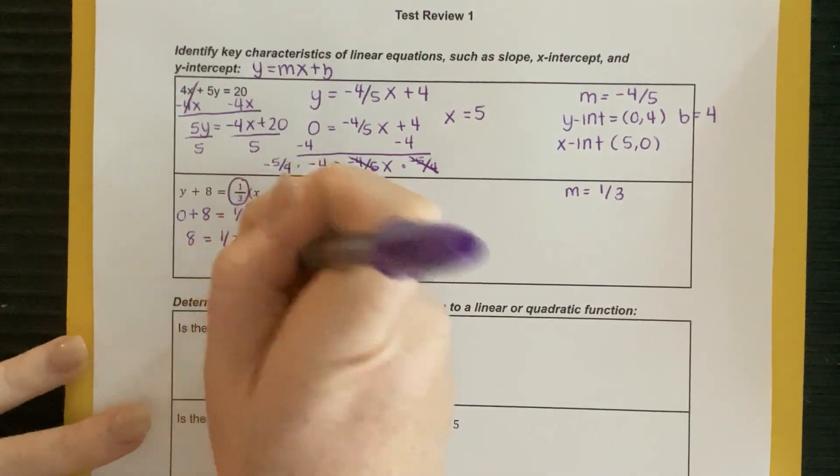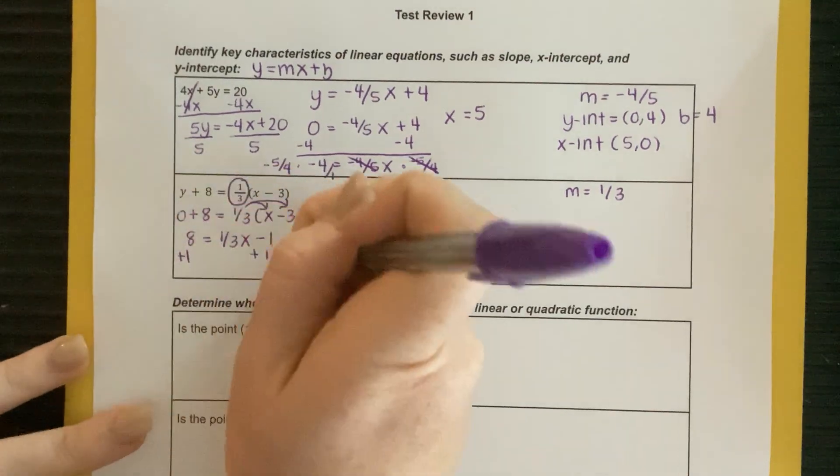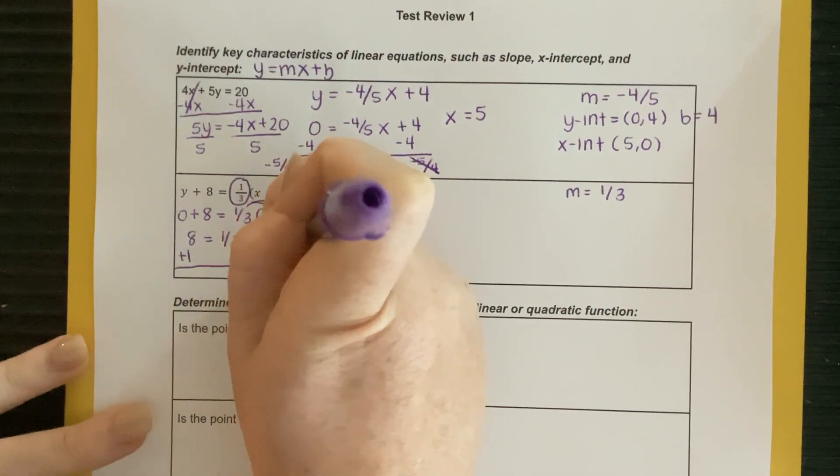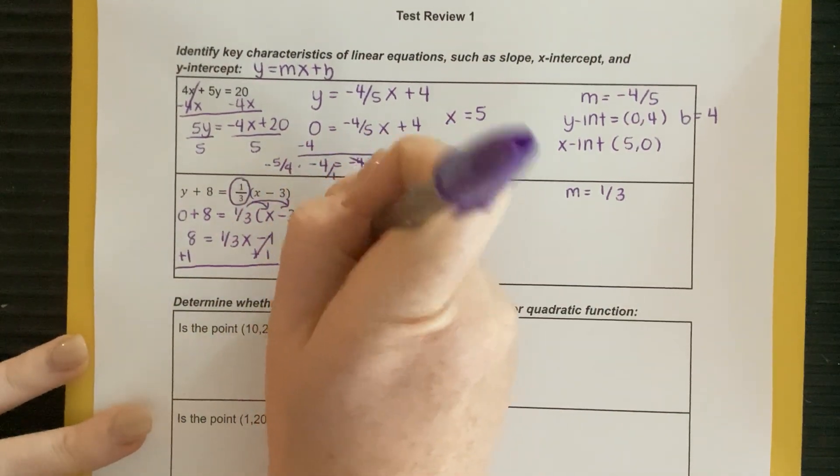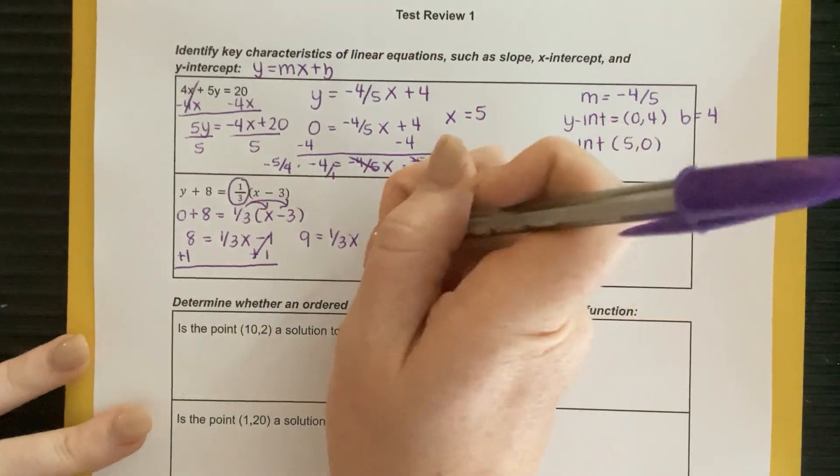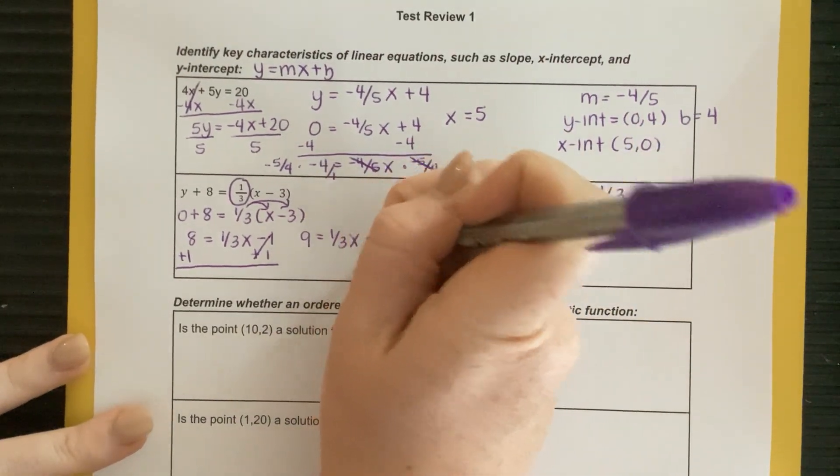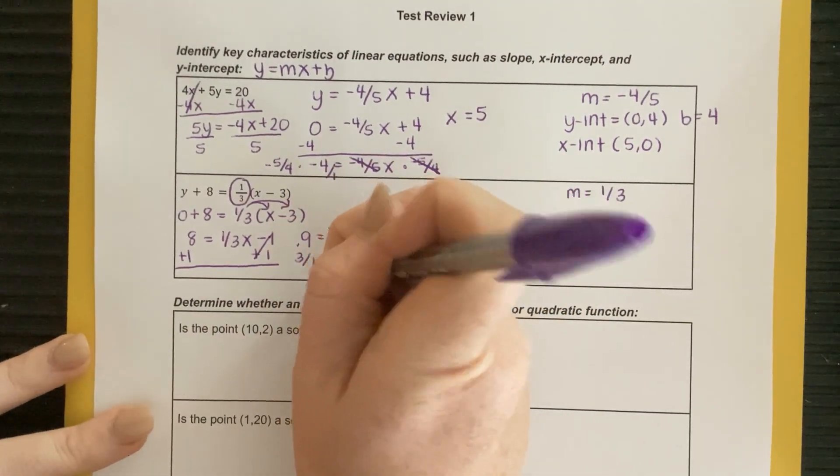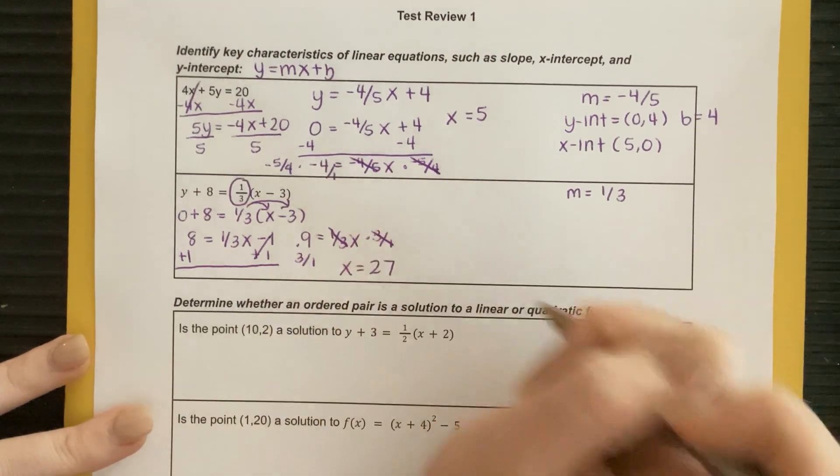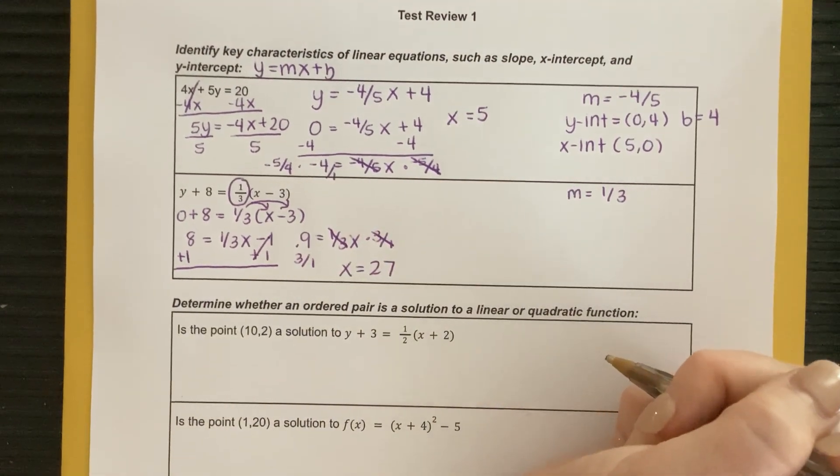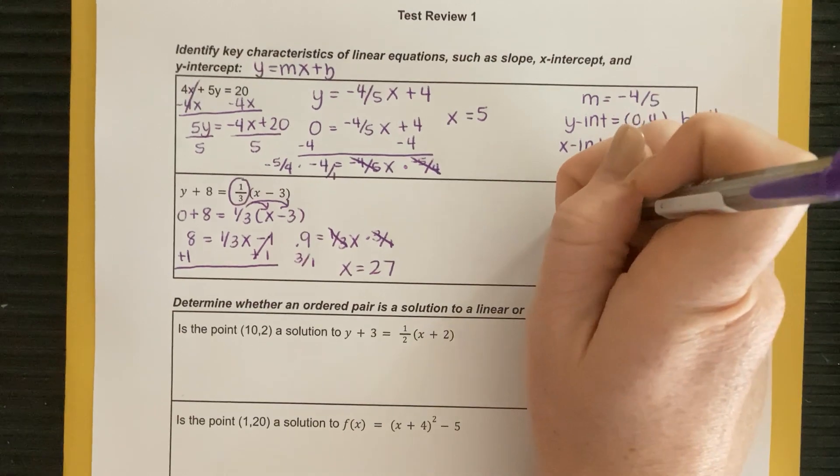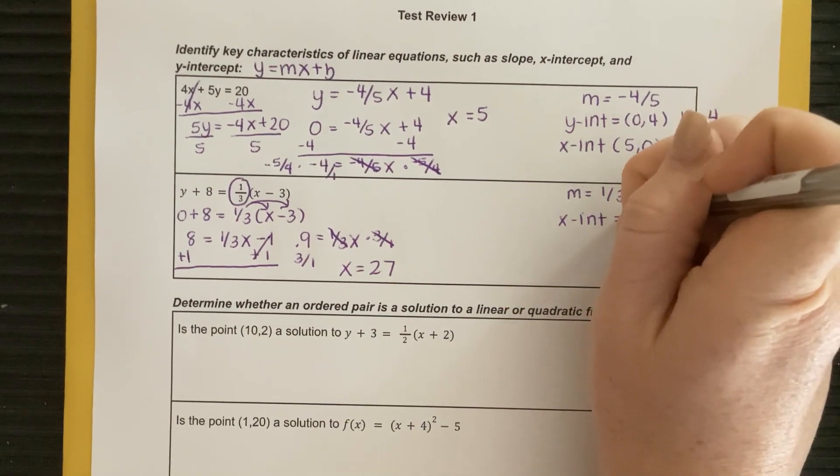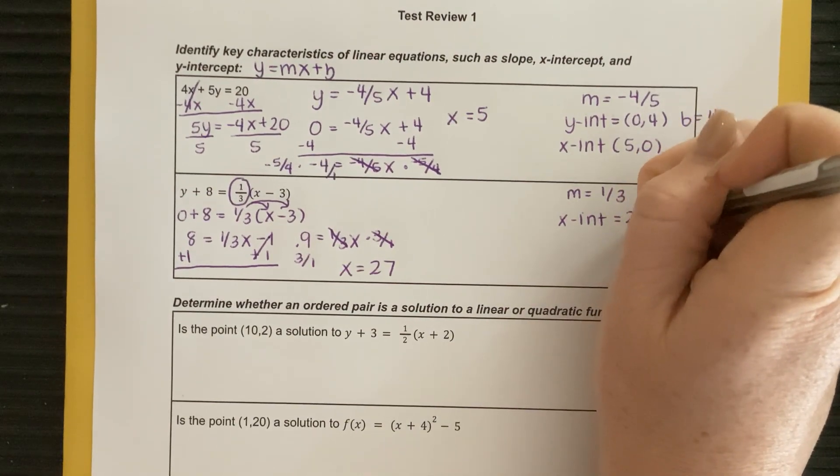So now I'm adding 1. Oops. Adding 1. I'm going to keep my work going right here next to it. So this is going to cancel, and I'm going to have 9 equals 1 third x. Again, to get rid of a fraction, you need to multiply by a reciprocal. So I multiply by 3 over 1 on this side. Multiply by 3 over 1 on this side. These cancel, and I'm left with x is equal to 27. It says 3 times 1 times 9, or 3 over 1 times 9 is equal to 27. So my x-intercept is equal to 27, 0.